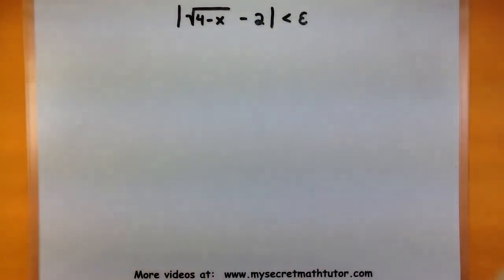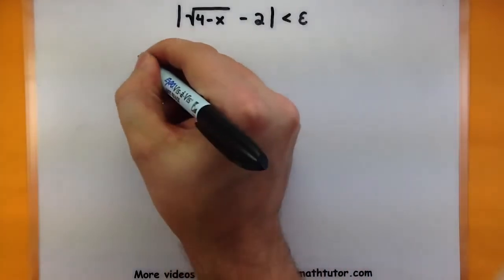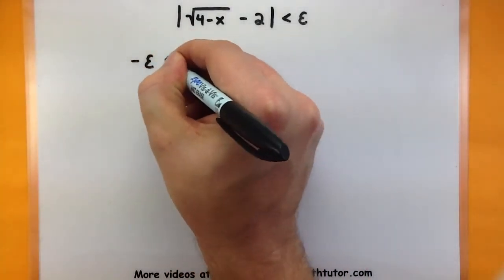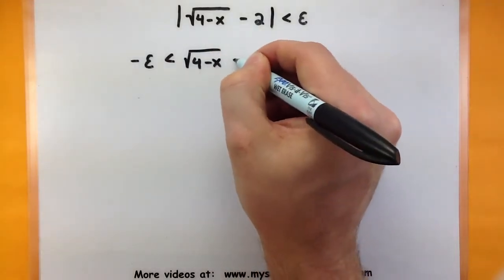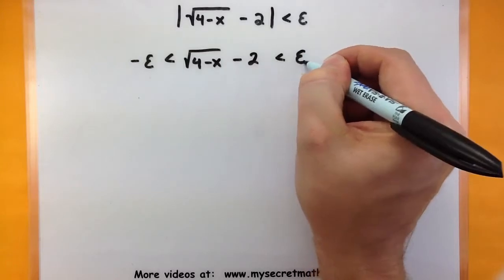The first thing I'm going to do is break it up because of this absolute value. So I could say negative epsilon is less than the square root of 4 minus x minus 2 is less than positive epsilon.